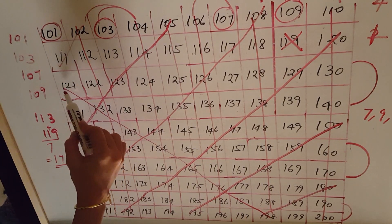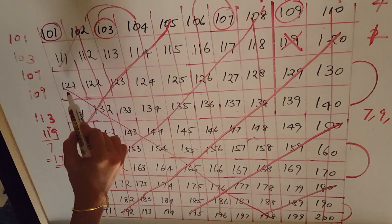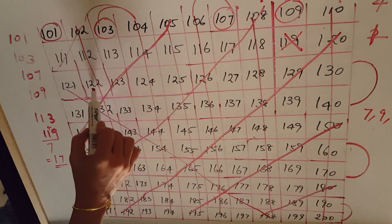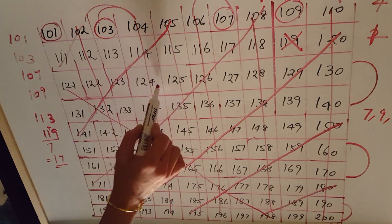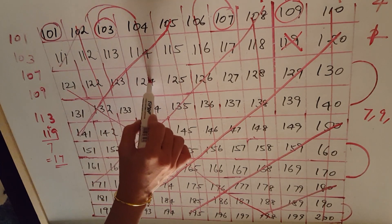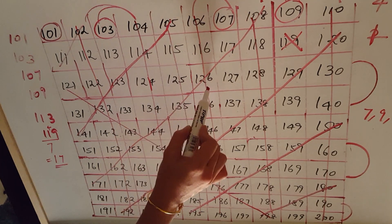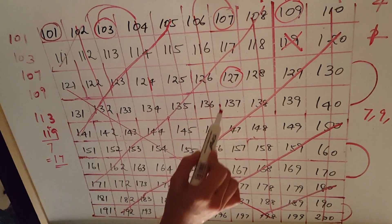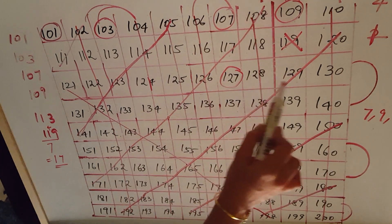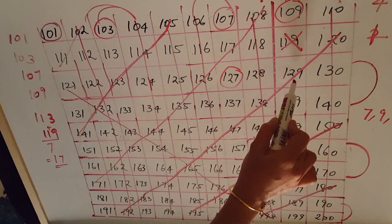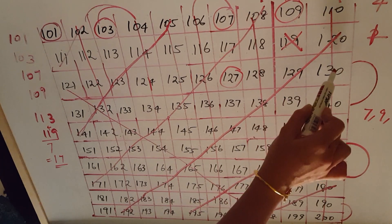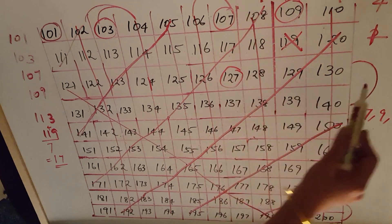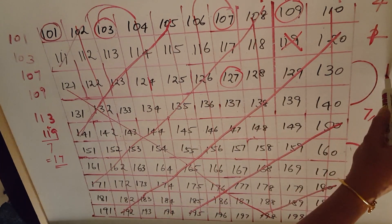You see 121 — already we cut it. 122, 123, 124 — already we striked out. 125, 126 — also cut. 127 only is there and is not divisible. 128 and 129 are already cut. So 127 is the only prime number in this range.